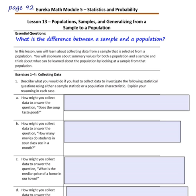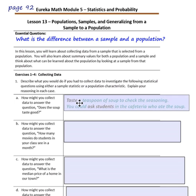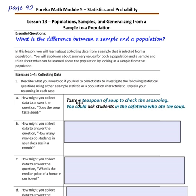Exercises 1 through 4. Describe what you would do to collect data to investigate the following statistical questions using either a sample statistic or a population characteristic, and explain your reasoning. Question A: How might you collect data to answer the question, 'Does the soup taste good?' You might taste a teaspoon of soup to check the seasoning, or you could ask students in the cafeteria who ate the soup.